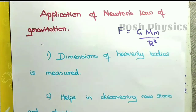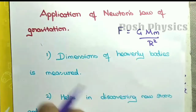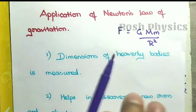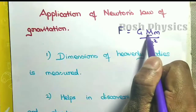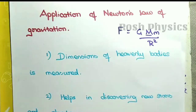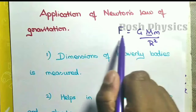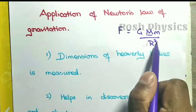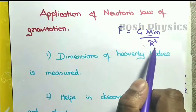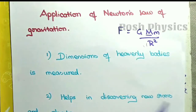The first point is: Newton's law of gravitation is used to find the dimensions of heavenly bodies — dimensions like length, mass, and time. It is very useful in determining the dimensions. For example, by using gravity we can calculate the mass of the Earth, and by this formula we can find out the dimensions of heavenly bodies.